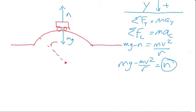Let's say the question is, what would it take to feel weightless? I'm going to rewrite this part of the equation using general terms. mg is just the force of gravity minus N equals mv squared over r.